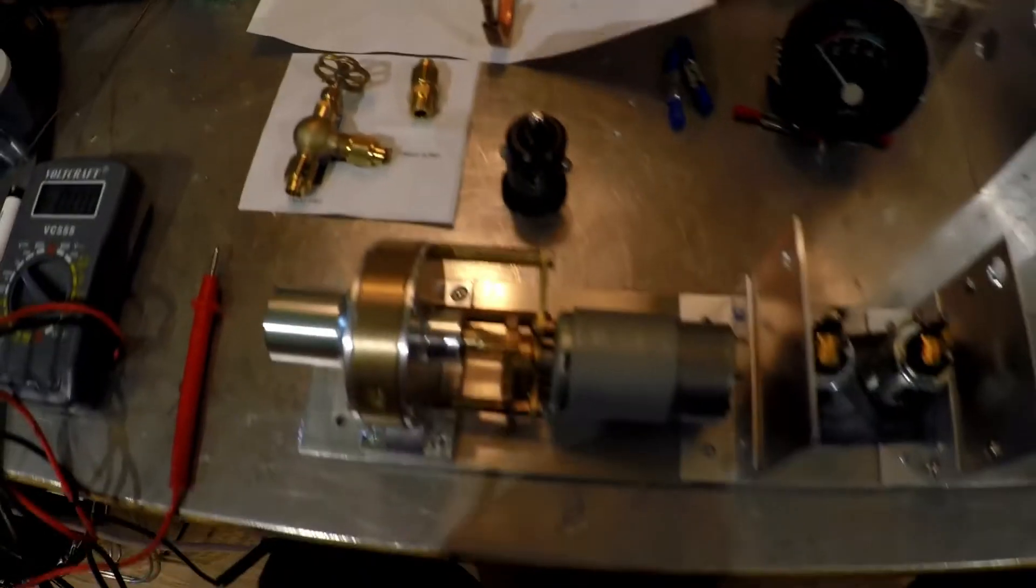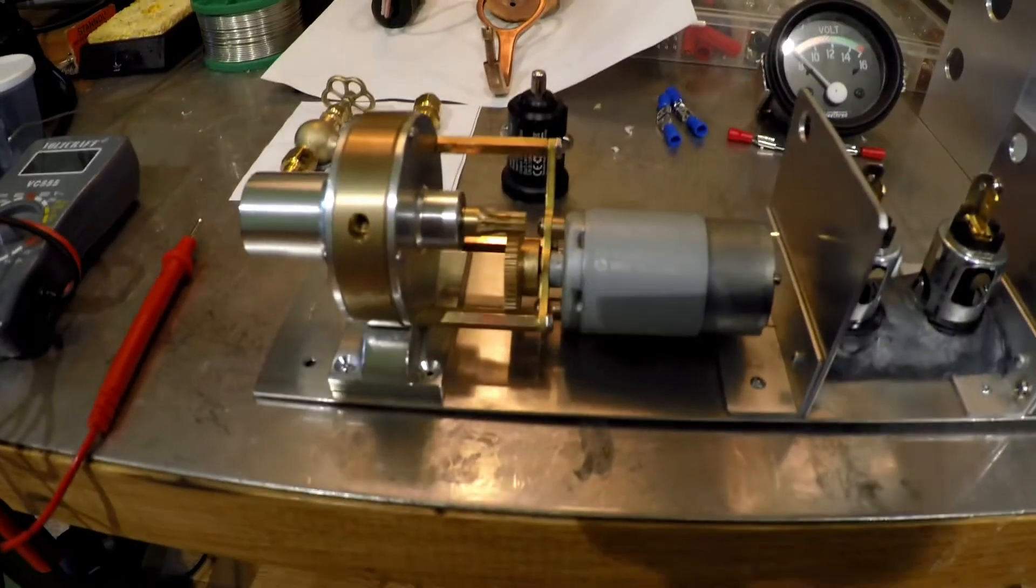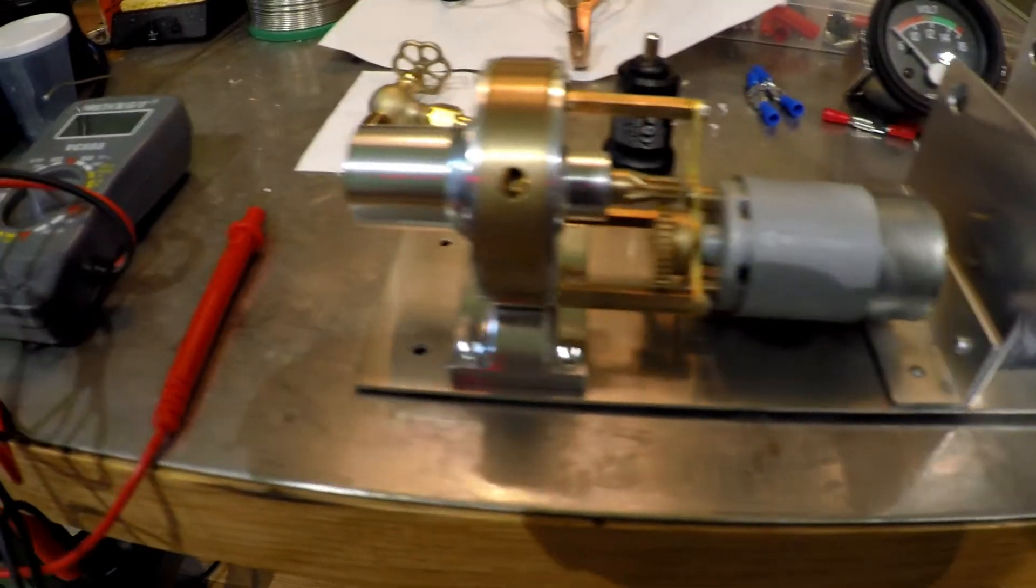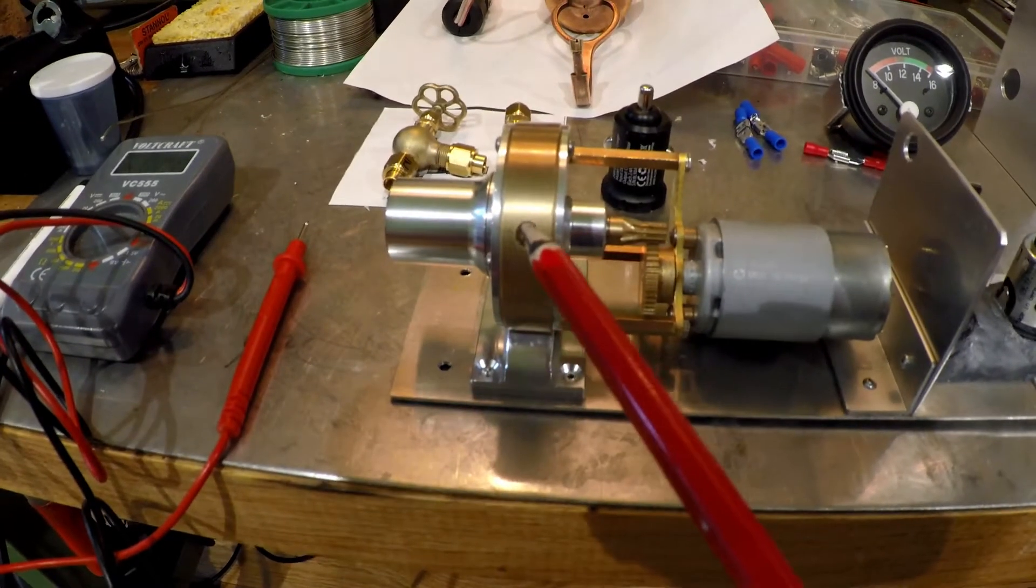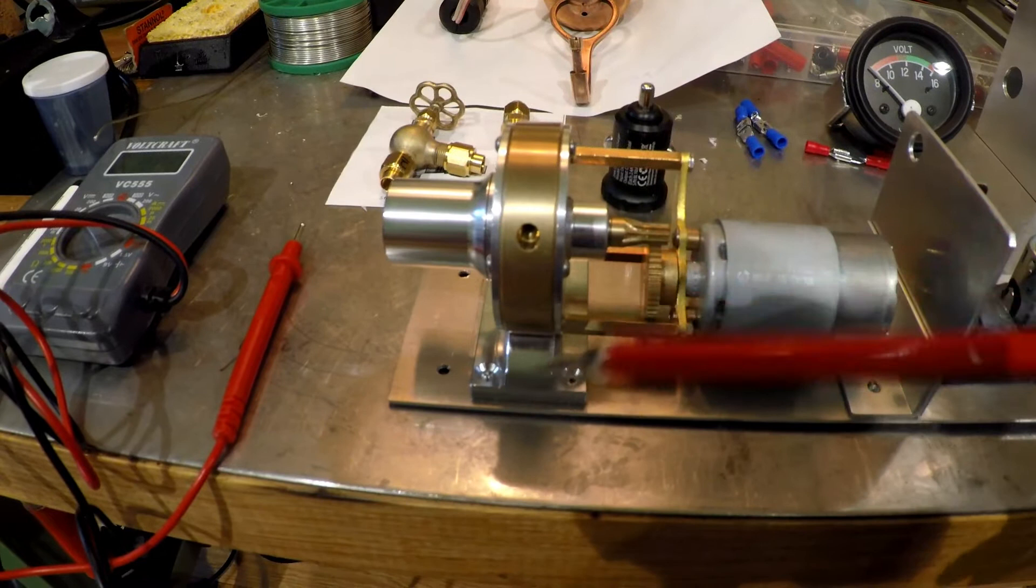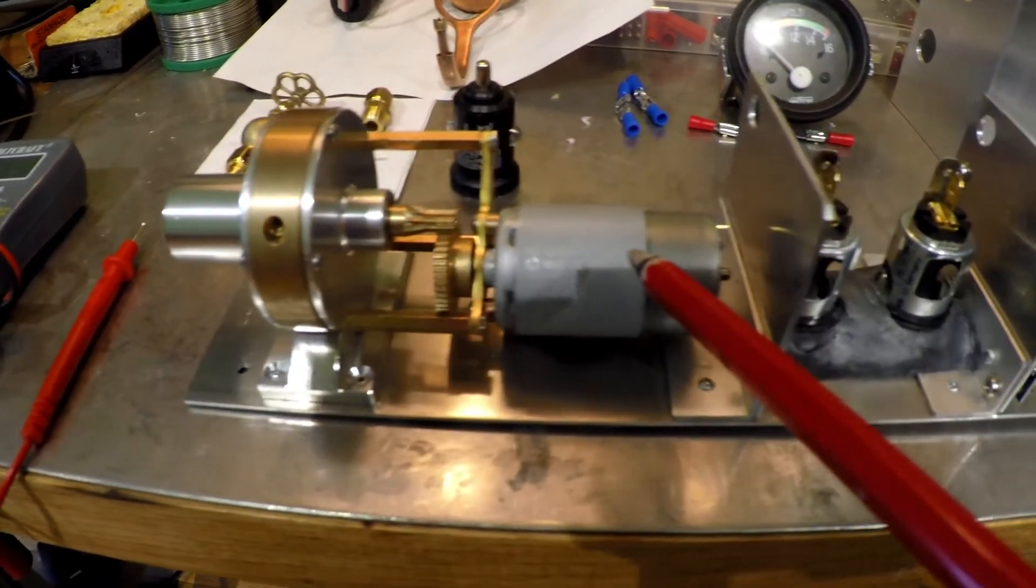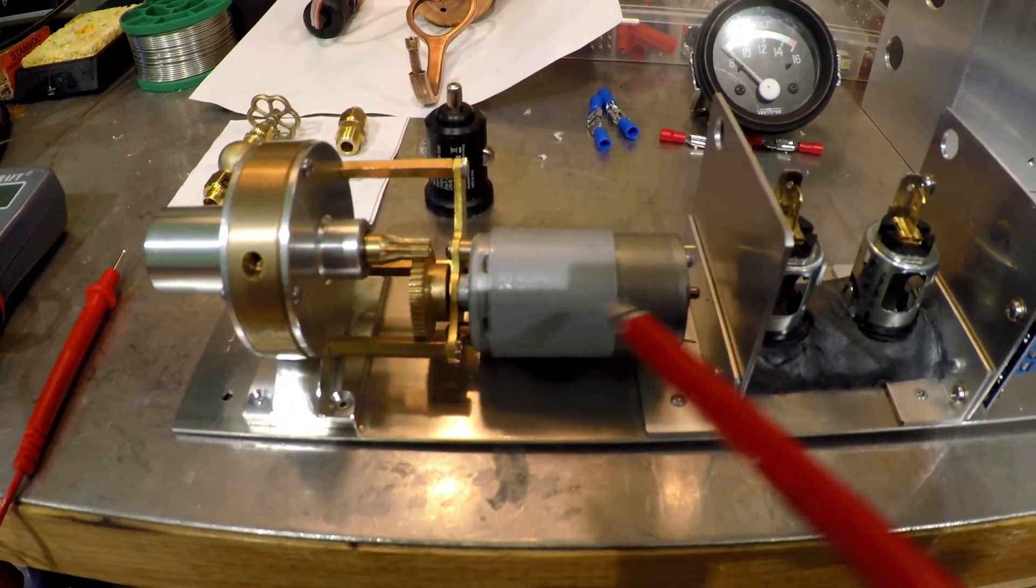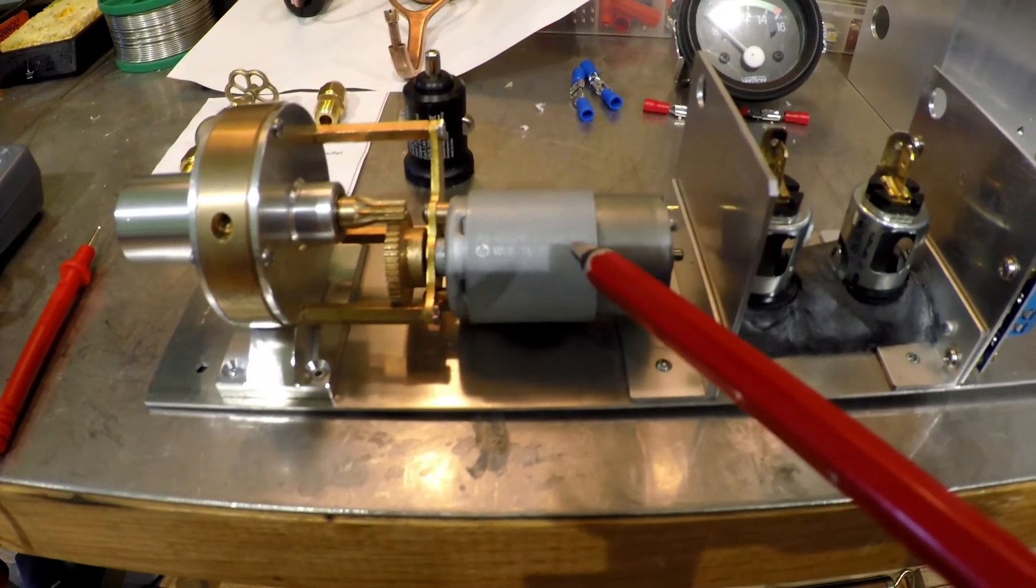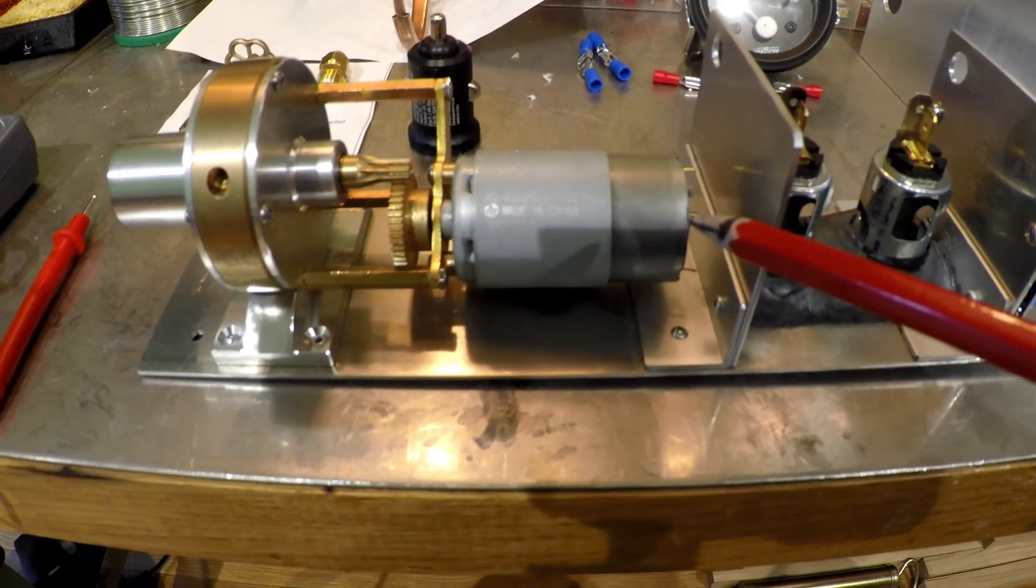It is really a steam turbine. The steam enters the turbine here at this position, and then the wheel starts to turn. Via this gear, this small motor is starting to turn with high speed and generates like a dynamo power of 10 to 36 volts.